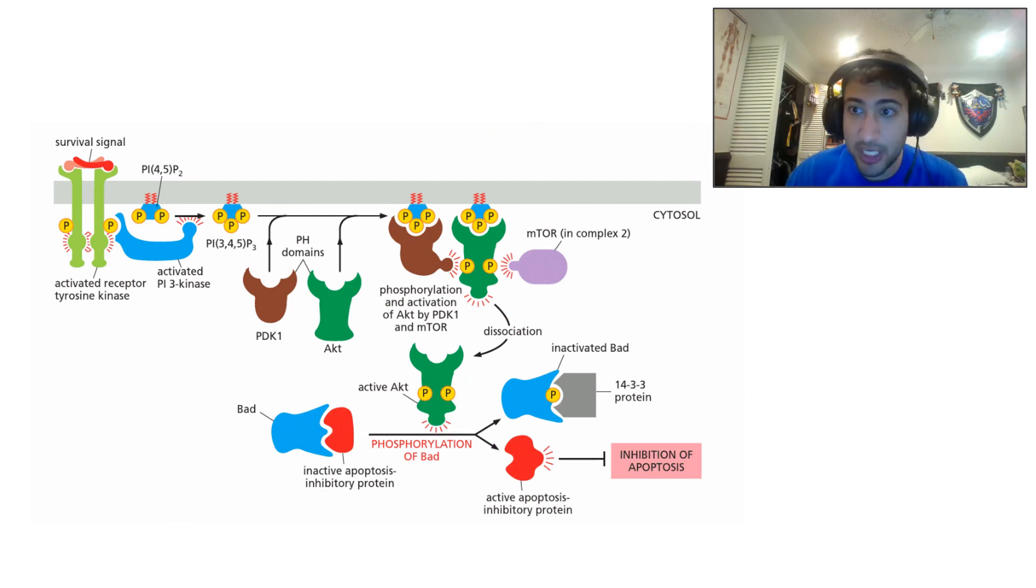So there's another receptor tyrosine kinase pathway. Let's say you get a signal to survive. Because remember, cells are always signaling their neighbors to survive. When cells don't get signals to survive from their neighbors, they die. So you get a survival signal. It activates a receptor tyrosine kinase. And that is going to activate PI3 kinase. And that's going to cause PIP2 to become PIP3. I don't really need you to memorize any of that.